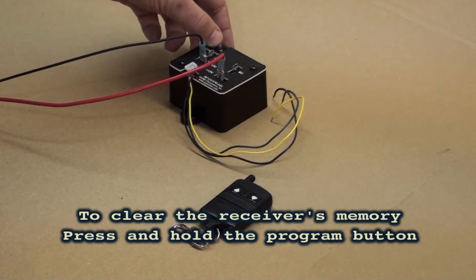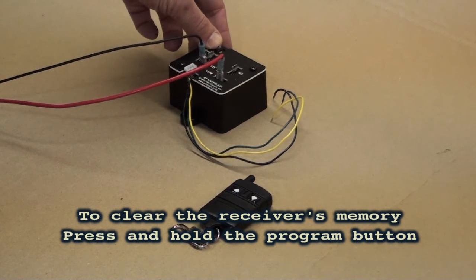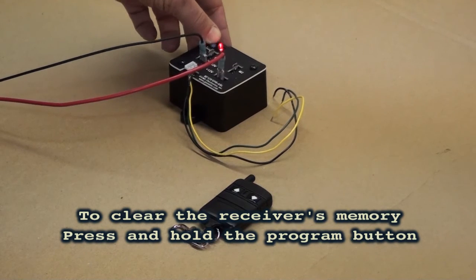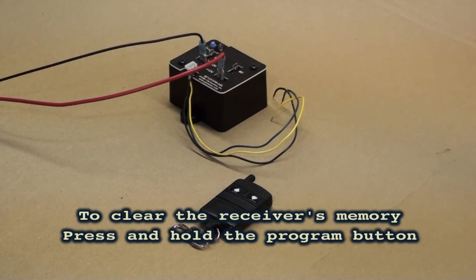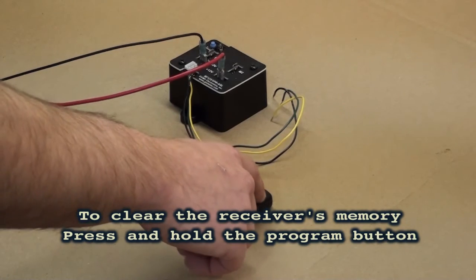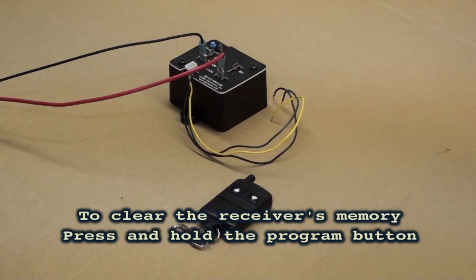Holding down the blue program button erases the memory and waits for a key fob to be paired to it. If no key fob is paired to it, it will not accept a signal.